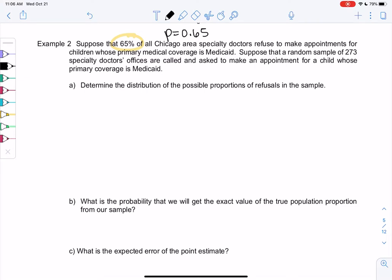So let's suppose we're going to take random samples of 273, so N is 273, of specialty doctors' offices, and we're going to call and ask to make an appointment, and we're going to keep track if they're giving us an appointment or not.